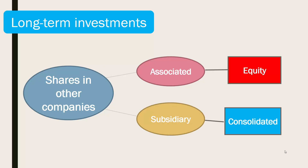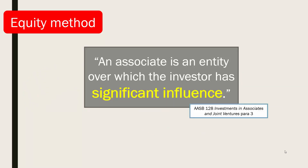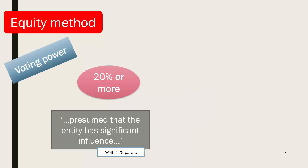These investments are accounted for using the equity or consolidated methods. The equity method is used when a long-term investment involves investing in an associated company. An associated company is where the investing company has significant influence over but not control of the investee company. Where an investing company holds 20% or more of the shares in an investee company, the existence of significant influence is presumed unless there is clear evidence to the contrary.